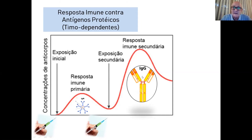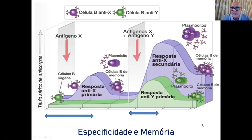Falando de sangue, a resposta passa de IgM para IgG — isso tem importância gigante para a sorologia. Esse é o mecanismo que gera a memória: se respondi uma vez ao antígeno X e entro em contato novamente, não faço mais a resposta primária baseada em IgM, mas sim uma resposta muito mais elevada baseada em IgG.